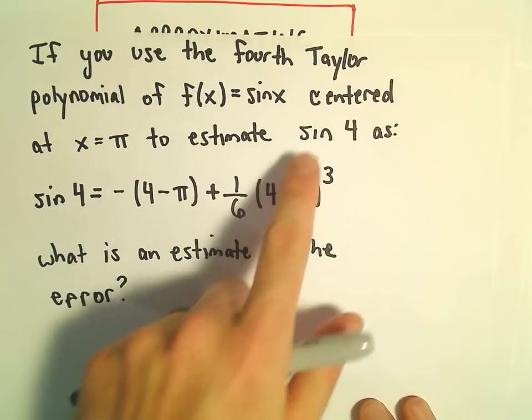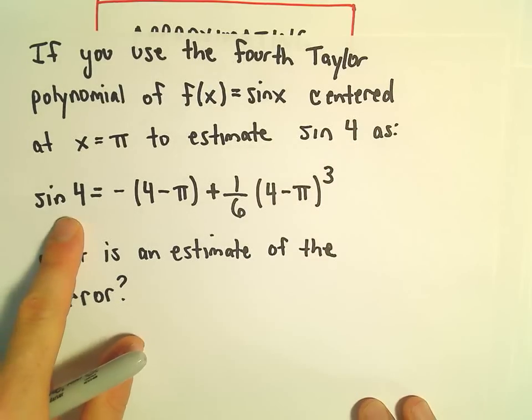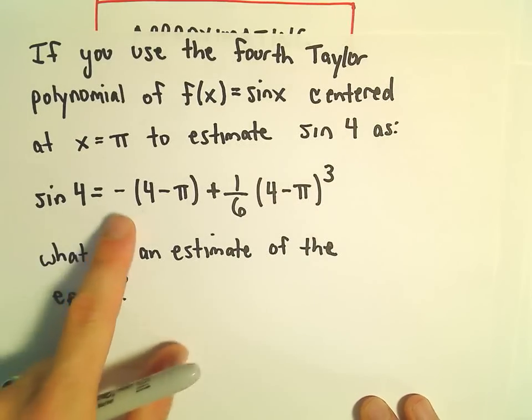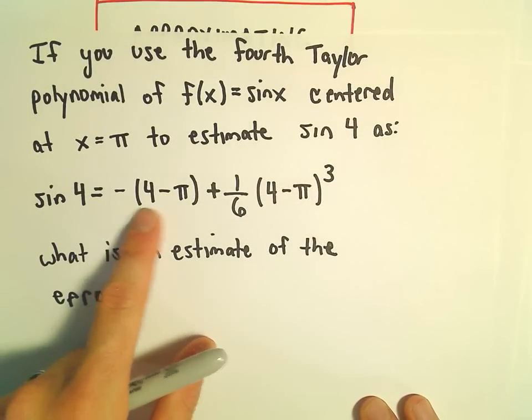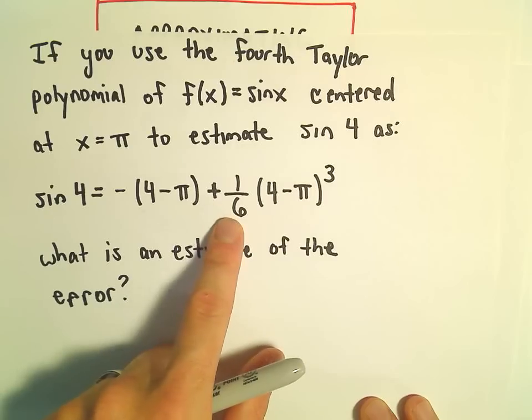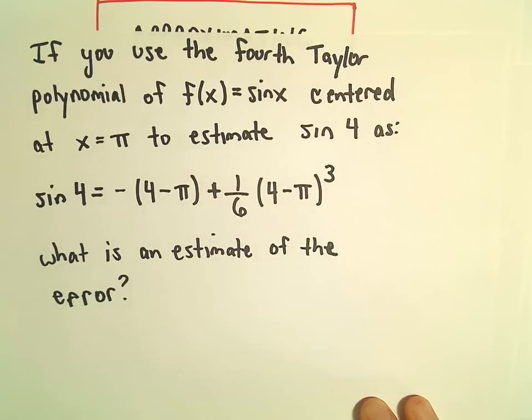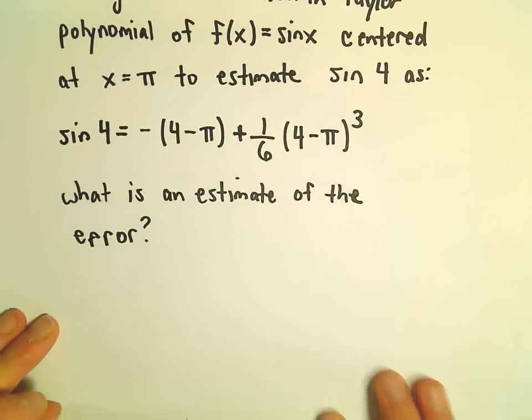So we're going to use this to estimate sine of 4, and our estimate for sine of 4 is going to be negative the quantity 4 minus pi plus 1 sixth times 4 minus pi cubed. We want to know what an estimate is of the error.